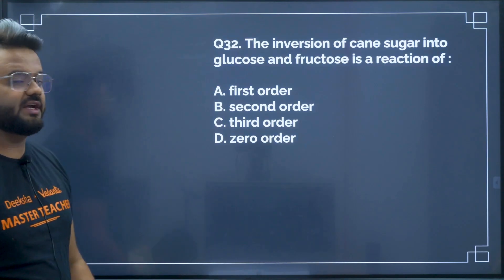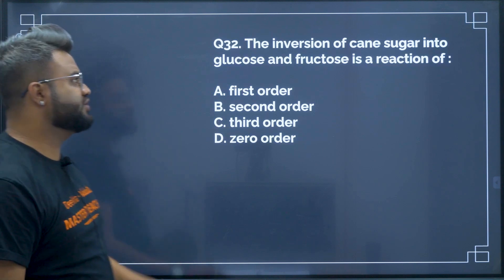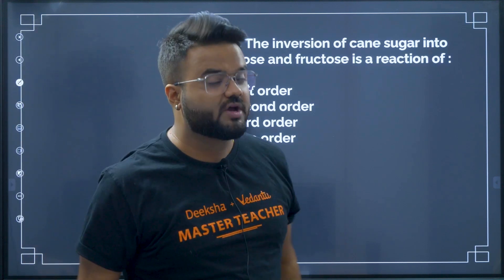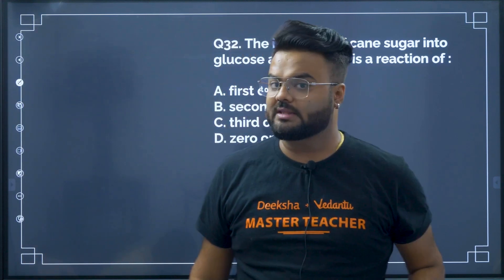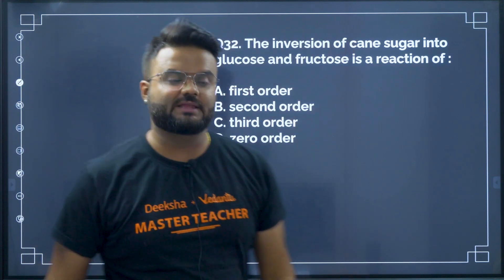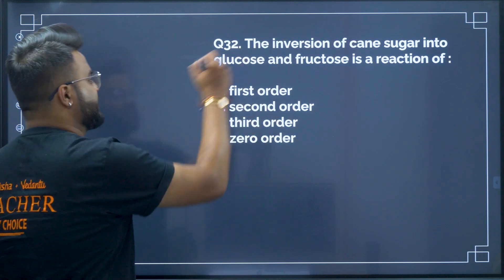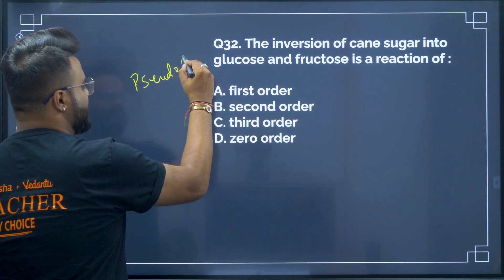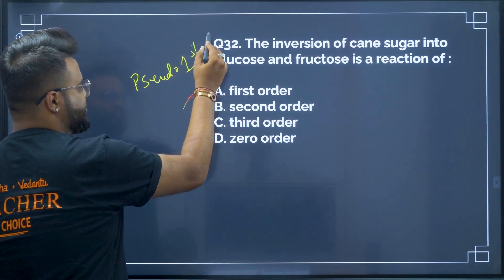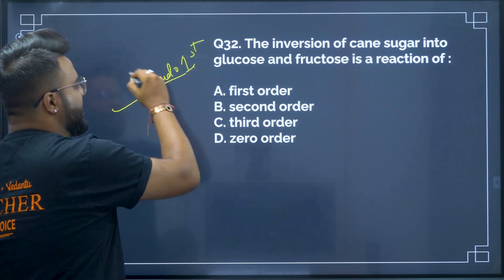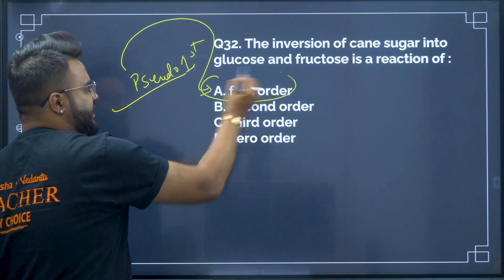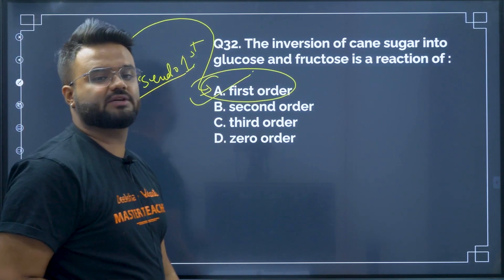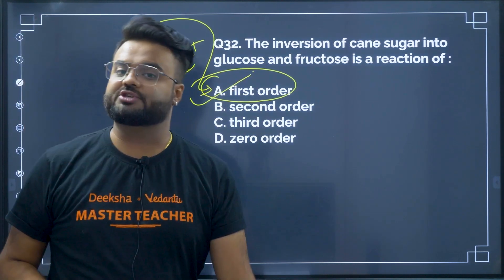Question number 32: the inversion of cane sugar into glucose and fructose. By seeing this, we can say that it is an example of a pseudo first order reaction. It is very near to the first order reaction, therefore your correct answer will be option A.